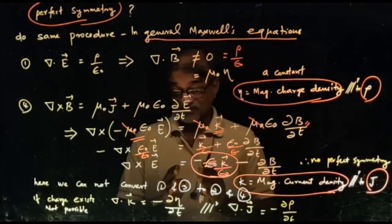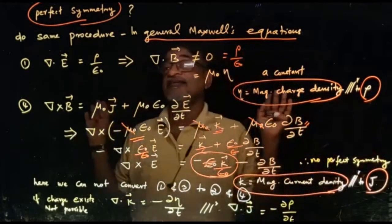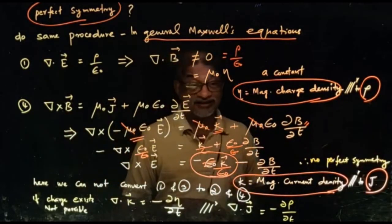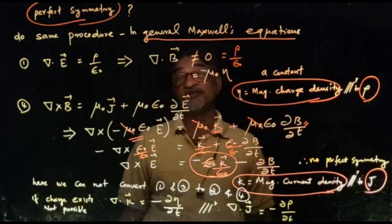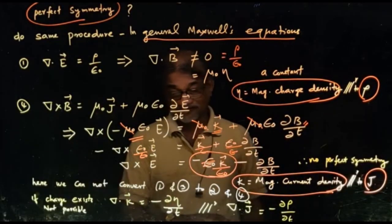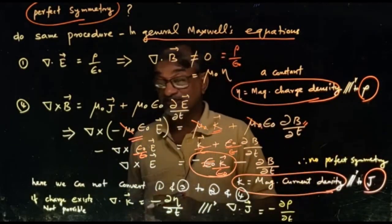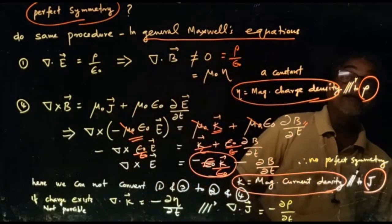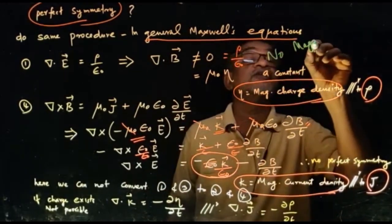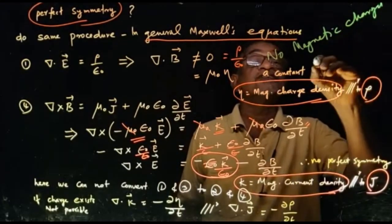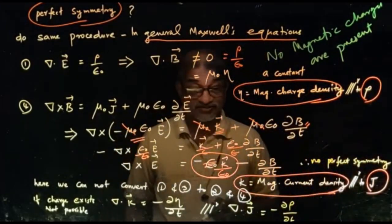So what is the conclusion? In free space, perfect symmetry is present. But in the case of matter — general Maxwell's equations — there is no symmetry. No transformation can be done. Due to this absence of symmetry, we conclude that magnetic charges are absent. No magnetic charges are present. That is our conclusion.